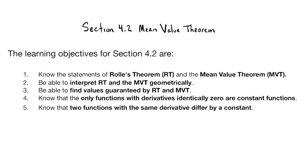I'm going to ask you to talk about why in your reflection. Both theorems have very nice geometric interpretations about the graphs of functions. Both guarantee certain values that do something, and we'll look at two consequences of the Mean Value Theorem. We already know that the derivative of every constant function is zero. The Mean Value Theorem tells us those are the only functions that can do that — any two functions with the same derivative differ by a constant; their graphs are just vertical shifts of each other.